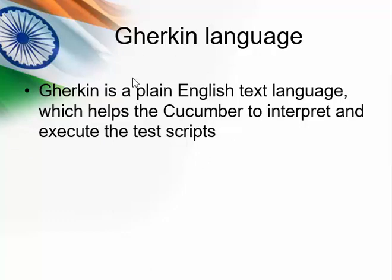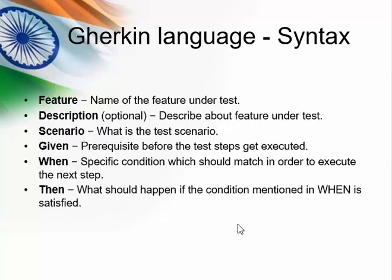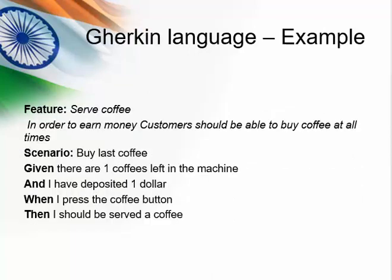We will see the syntax of a requirement written in Gherkin language with an example. Hope everyone knows about an automatic coffee machine — we are going to write a requirement for that. The feature is 'serve coffee.' The description for this requirement is: in order to earn money, customers should be able to buy coffee at all times. We will have many scenarios; I am going to choose one scenario: 'Buy last coffee.' For that, what will be the prerequisite? Gherkin uses several keywords.